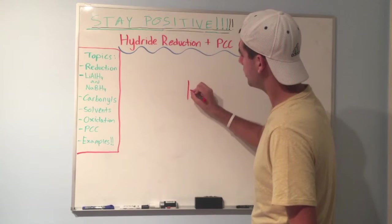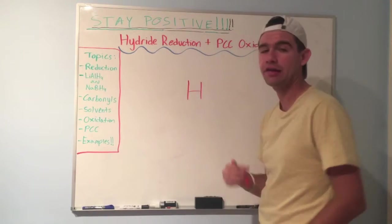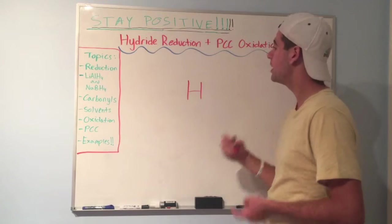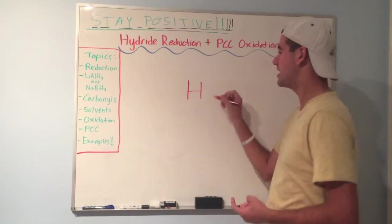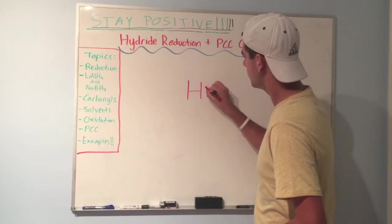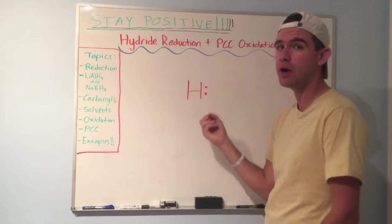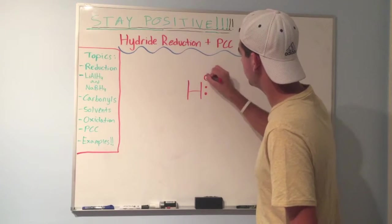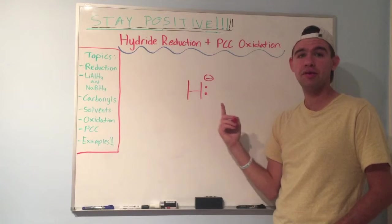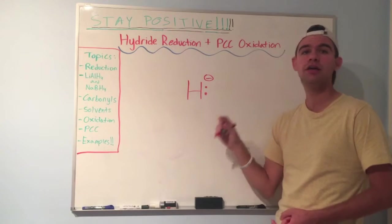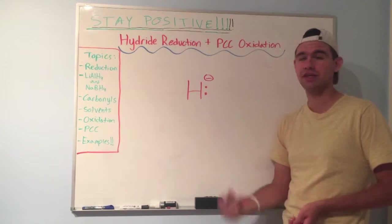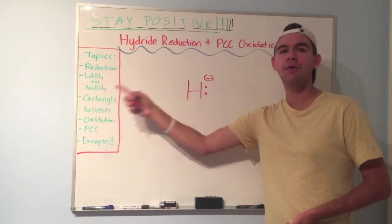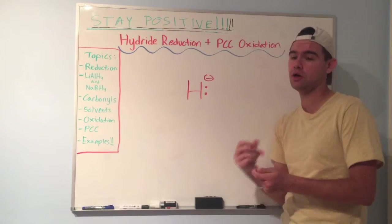So if we look at a hydrogen atom, normally it has one electron, right? It's neutral. But if we can find a source of hydrogen that has two electrons, we call that hydride and it's charged, right? It has a negative formal charge. This is a very reactive species and we can use it to reduce all sorts of things. We're going to look specifically at how we can reduce a carbonyl to an alcohol.